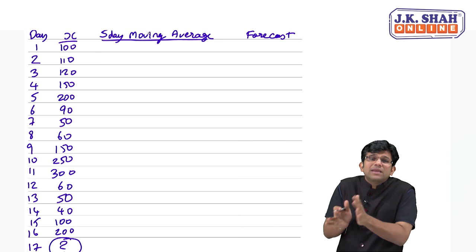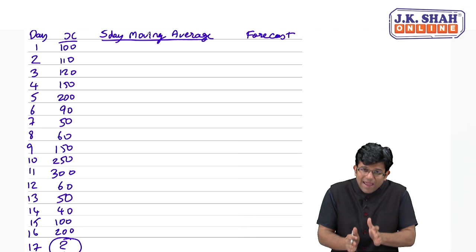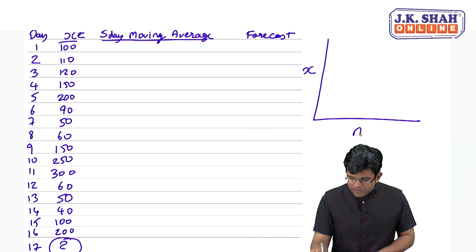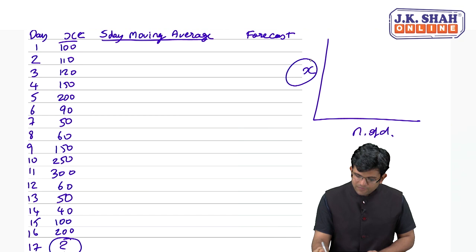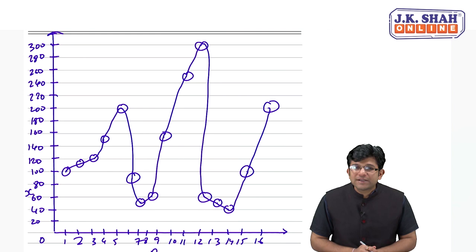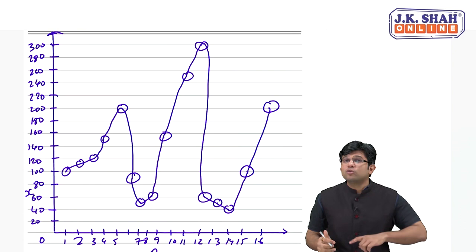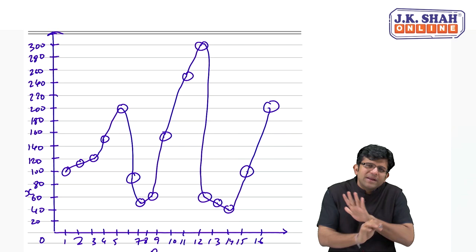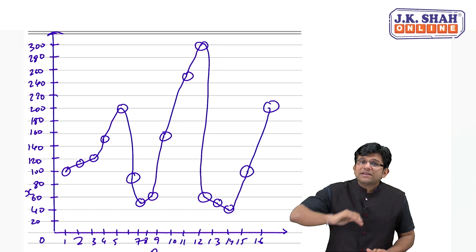I am going to teach you something called a 5-day moving average. To understand it mathematically is very simple, but to understand the depth of it conceptually, you also need to understand it graphically. Without that it becomes very difficult to grasp what a moving average is trying to explain. Before going to the mathematical part, let me first plot this entire data of X on a graph where the y-axis represents share prices of X and the x-axis represents the number of days.